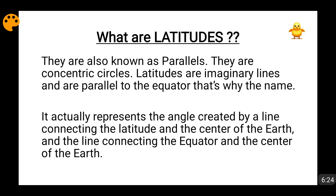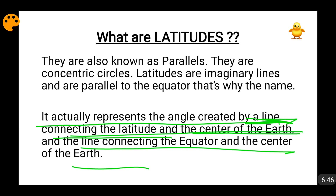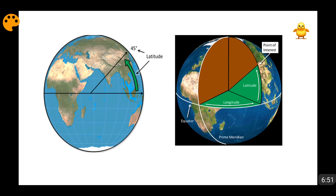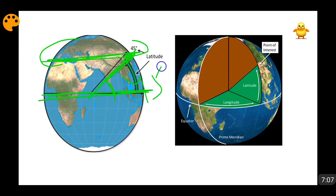How are we going to calculate the latitude of a particular point? Latitude actually represents the angle created by the line connecting the latitude and the center of the earth, and the angle this line makes with the line connecting the equator and the center of the earth. If I take a point on a latitude and connect it to the center of the earth, that angle will be the latitude. For example, if that angle is 45 degrees, this will become 45 degree latitude.